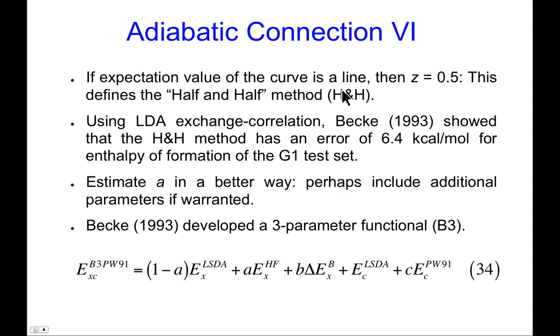Now, as I mentioned, if the expectation value of the curve is a line, then z is 0.5. That was a method first explored by Becke, and he called it a half-and-half method. Using LDA for the exchange correlation component, in 93, Becke showed that the half-and-half method had an error of 6.4 kcals per mole for the enthalpy of formation of a test set called the G1 test set of molecules. That was a pretty good result. It takes pretty heroic post Hartree-Fock models to get down to errors substantially smaller than 6.